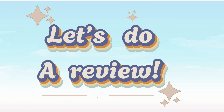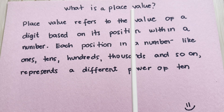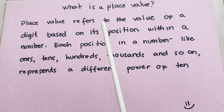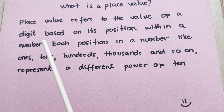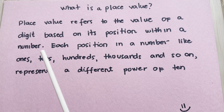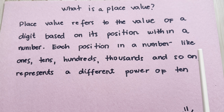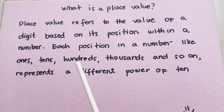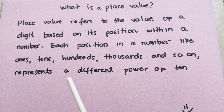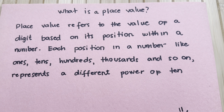Now, join me and let's do a review. What is a place value? Place value refers to the value of a digit based on its position within a number. Each position — like ones, tens, hundreds, thousands, and so on — represents a different power of 10.